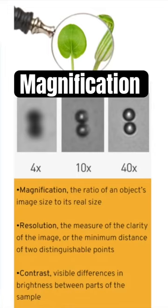Magnification is the ratio of an object's image size compared to its real size. For example, if a cell is one micrometer and we see it under the microscope as 10 micrometers, this magnification is 10x or we magnified it 10 times.